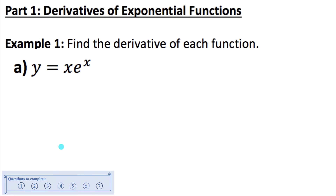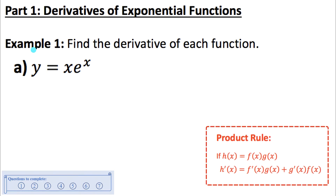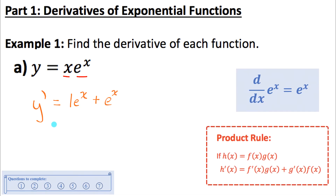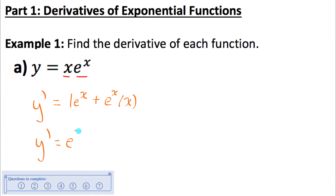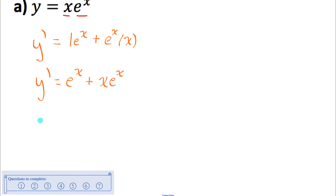This first example we actually don't need chain rule — we need product rule because it's a product of two functions: x multiplied by eˣ. Using product rule, y' equals the derivative of the first function (derivative of x is 1) multiplied by the second function, plus the derivative of the second function (the derivative of eˣ is eˣ · ln e, and ln e is just 1, so it's just eˣ) multiplied by the first function x. The derivative is eˣ + xeˣ, which we can factor as eˣ(1 + x).